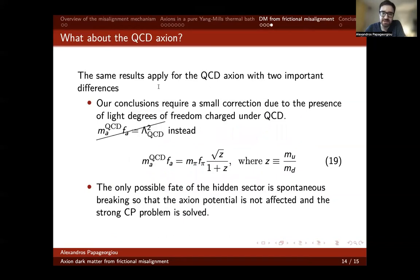What happens to the QCD axion? For the QCD axion, there are two important differences. The first difference is that the product MA times FA is given in terms of standard model parameters, as opposed to the conventional scenario in which it is just the confinement scale squared. That induces an order one correction to everything that I showed you before. The second modification is that for the QCD axion, the only possibility is spontaneous breaking. We cannot afford for the hidden sector to be confined, as in that case, the minimum of the potential would not be the CP conserving one.